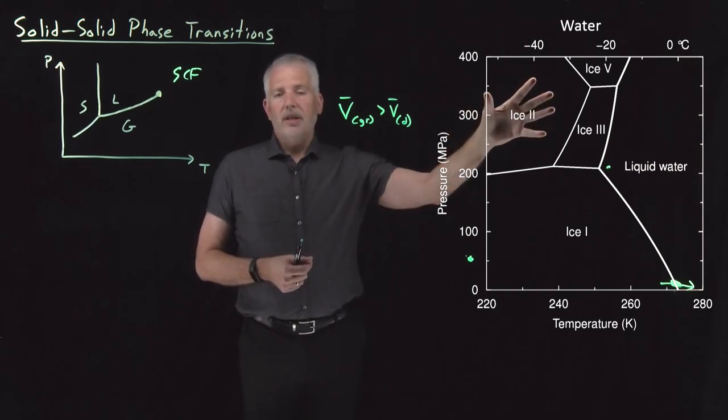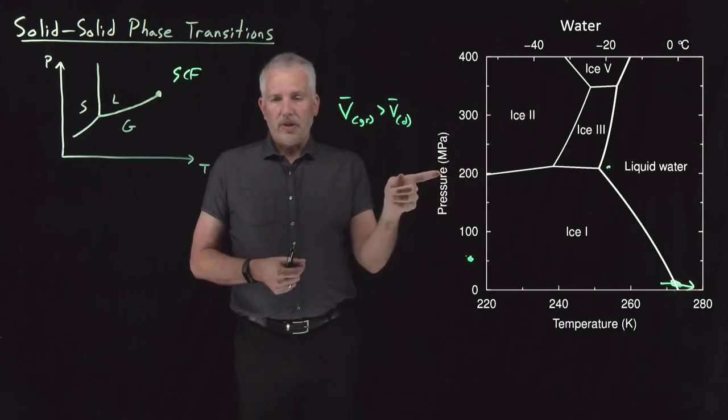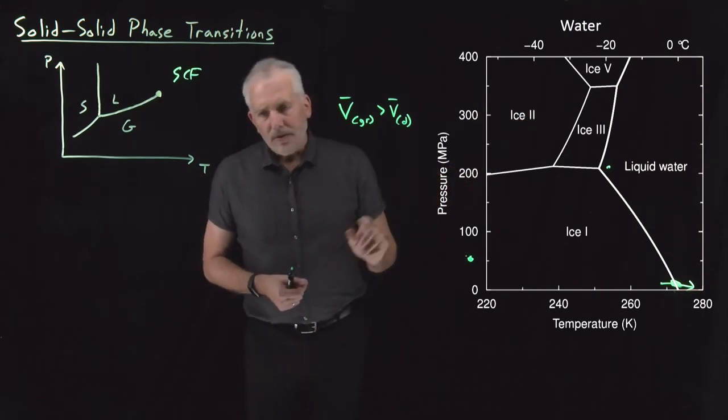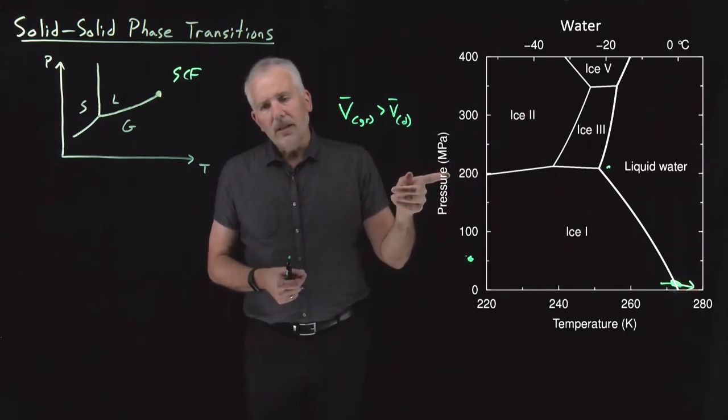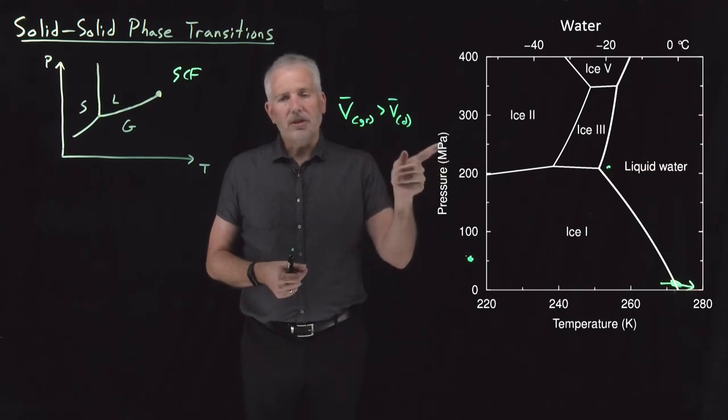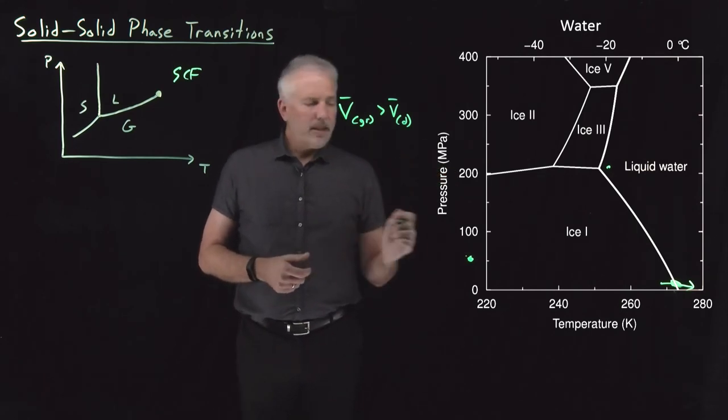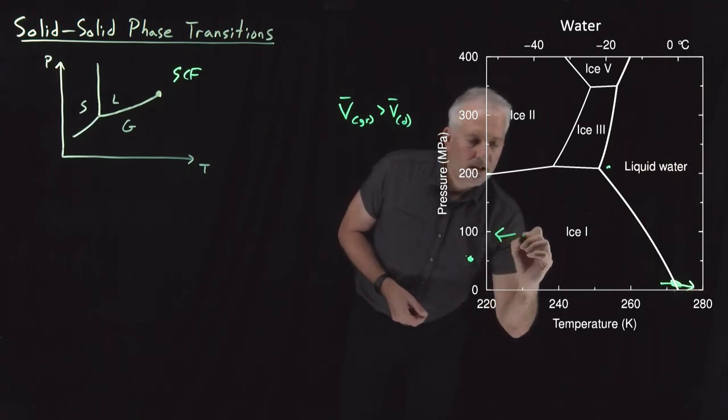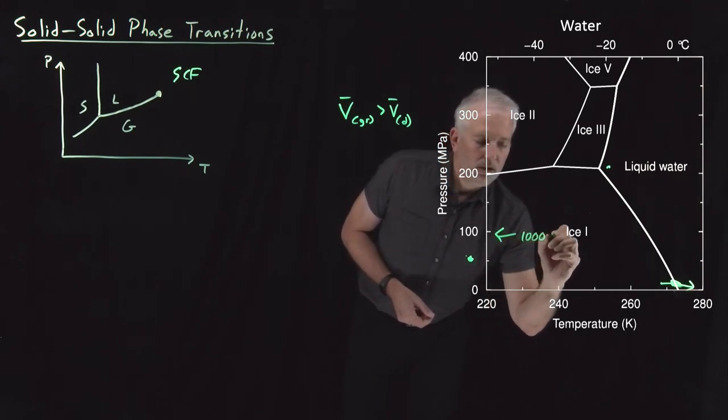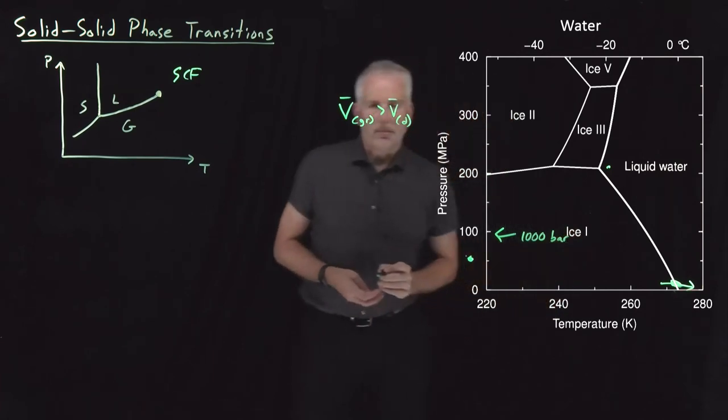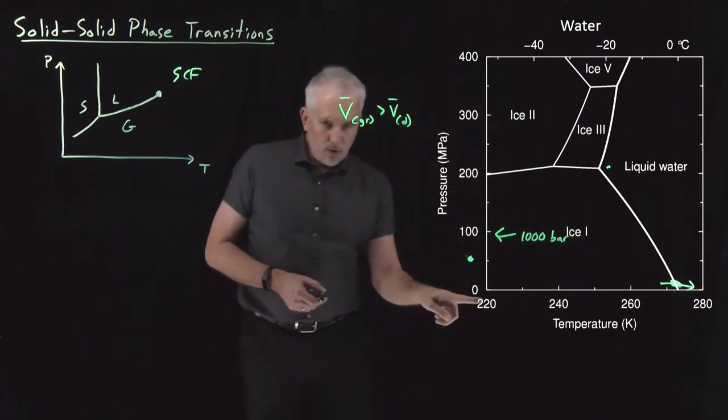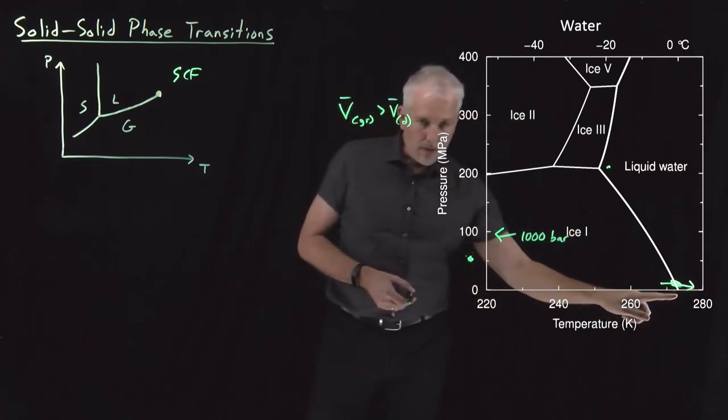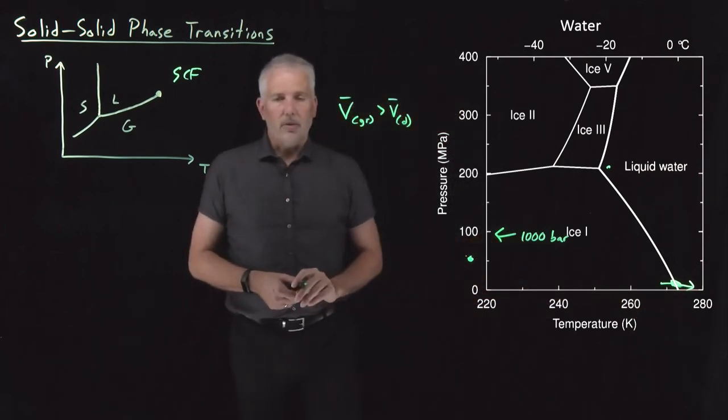So these are unfamiliar phases of ice because we don't typically operate at pressures of, actually I've misread this, it's not bars, it's megapascals. So this 100 megapascals, that would actually be about 1,000 atmospheres, 1,000 bar. So again, room pressure is still very low on this diagram, practically down to the lower axis.